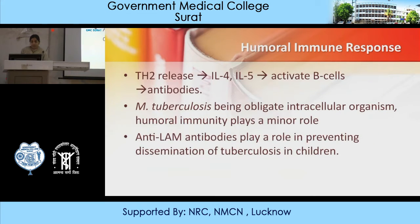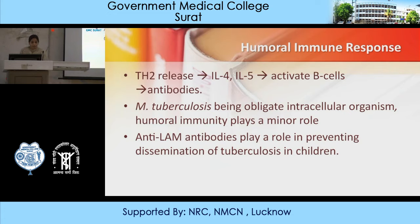In humoral immune response, T helper 2 cells release IL-4 and IL-5, activating B cells and then antibodies. Since M. tuberculosis is an obligate intracellular organism, humoral immunity plays a minor role. Anti-LAM antibody plays a role in preventing dissemination of tuberculosis in children.